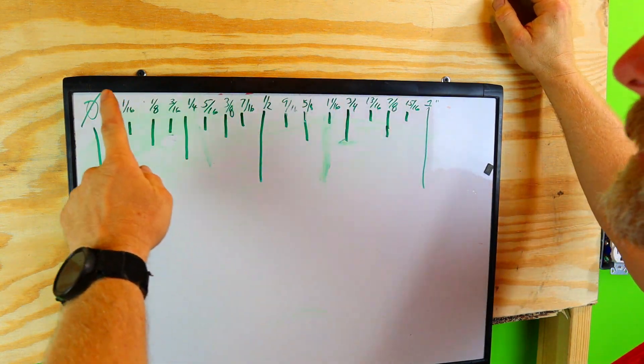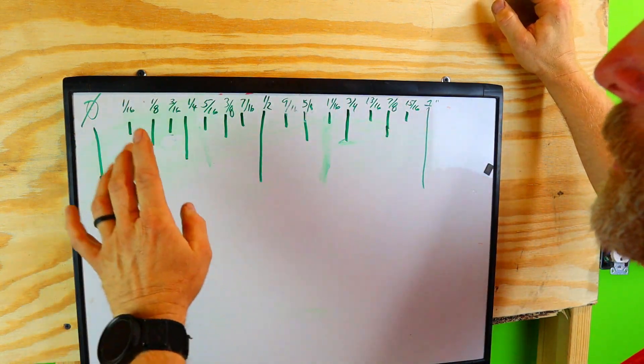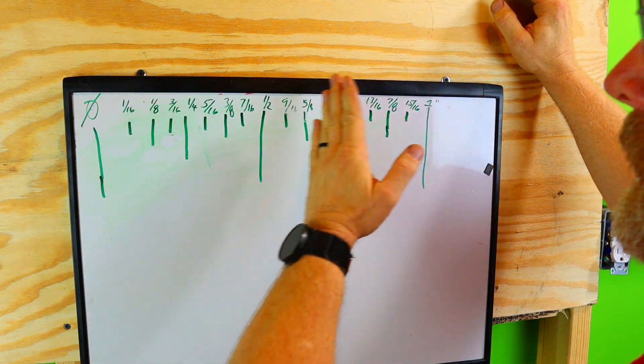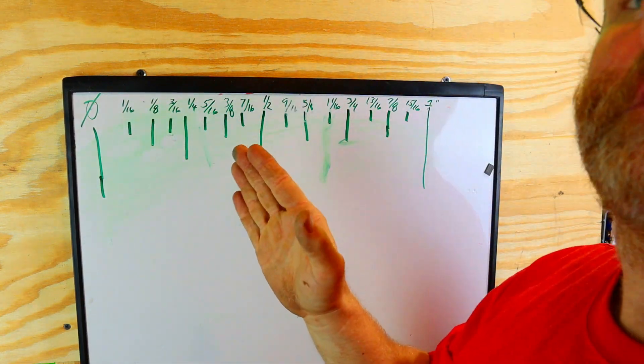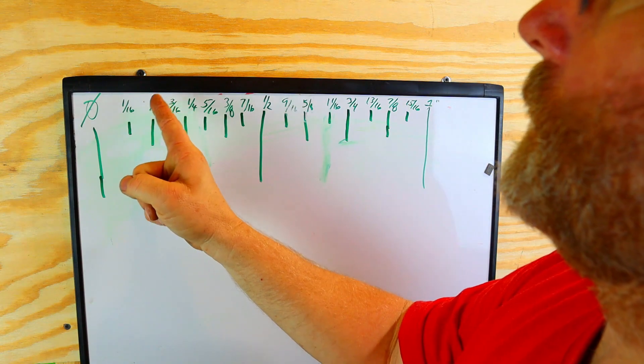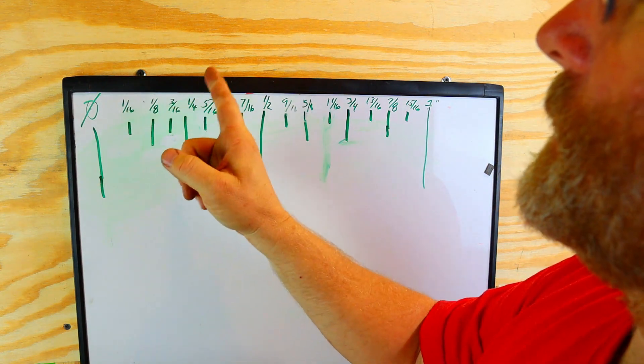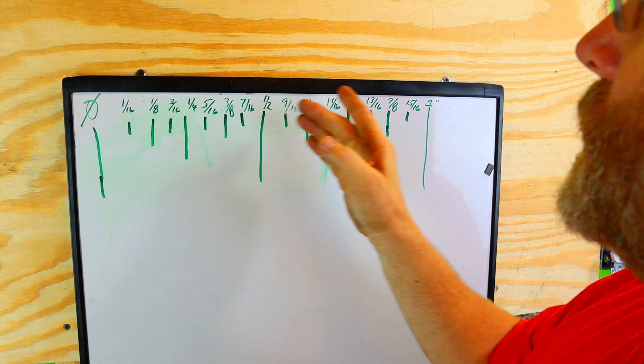This could be 12 and 13, so on and so forth. These marks will never change on a standard American ruler. So you have a sixteenth, an eighth, three sixteenths, a quarter, five sixteenths, and so on and so forth.